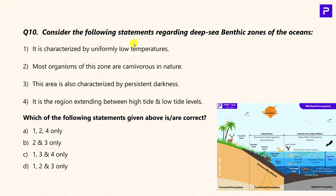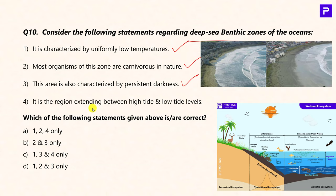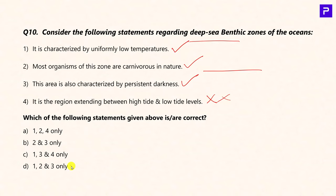Question 8: Consider statements regarding deep sea benthic zones of oceans. The benthic zone is the bottom layer of the aquatic environment, characterized by uniformly low temperatures (True) and persistent darkness (True). Most organisms in this zone are carnivorous in nature. Statement 4 — that it is the region extending between high tide line and low tide line — is False; that describes the intertidal zone, not the benthic zone. The answer is 1, 2, and 3 only.